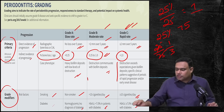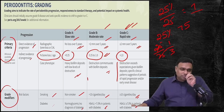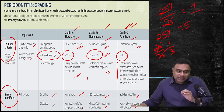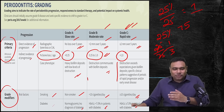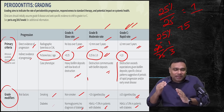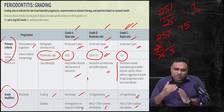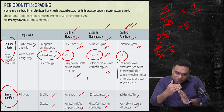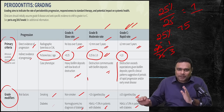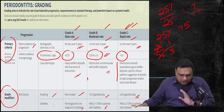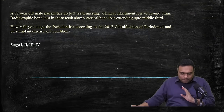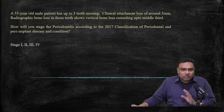So: staging is 1–2–3–4, with severity (CBT), complexity, extent and distribution. Grading is A–B–C: slow, moderate, rapid. You have direct evidence of progression (bone loss over 5 years), indirect evidence (bone loss divided by age, or amount of plaque), and risk modifiers (diabetes and smoking). You classify the patient as, for example, Stage 3 Grade B or Stage 4 Grade C — giving both a stage based on condition and a grade based on progression rate.